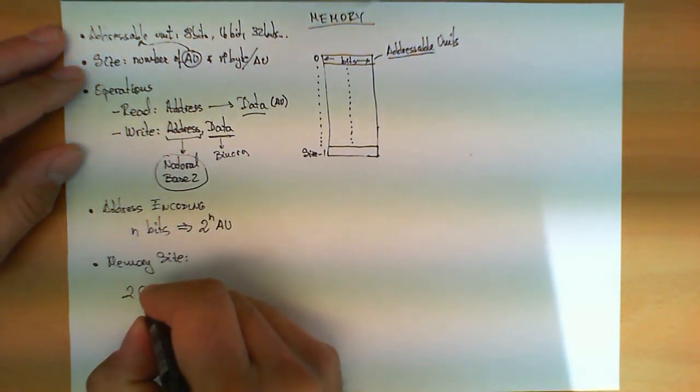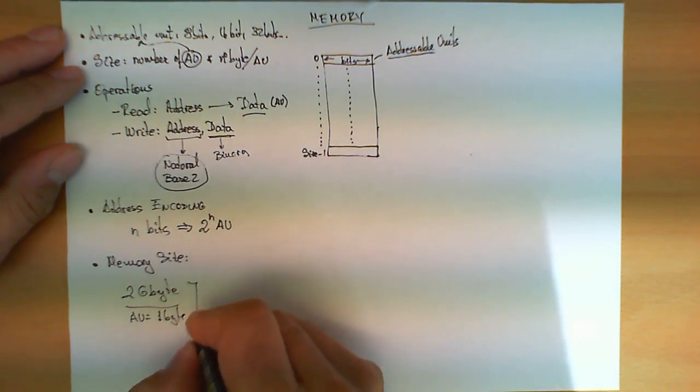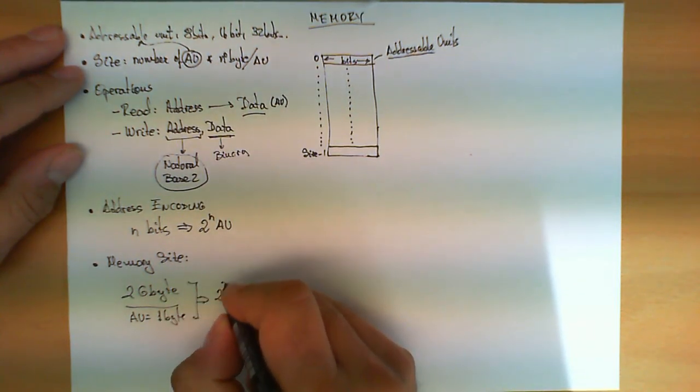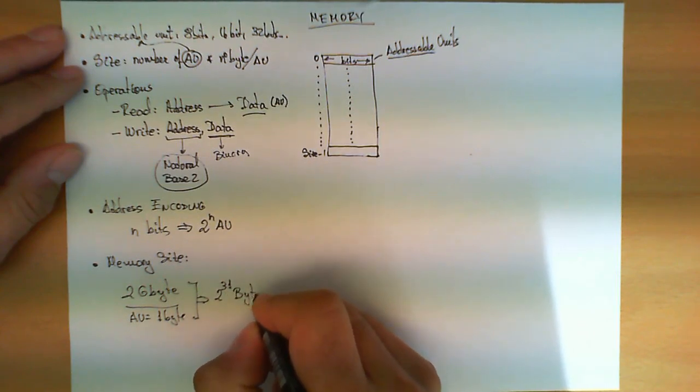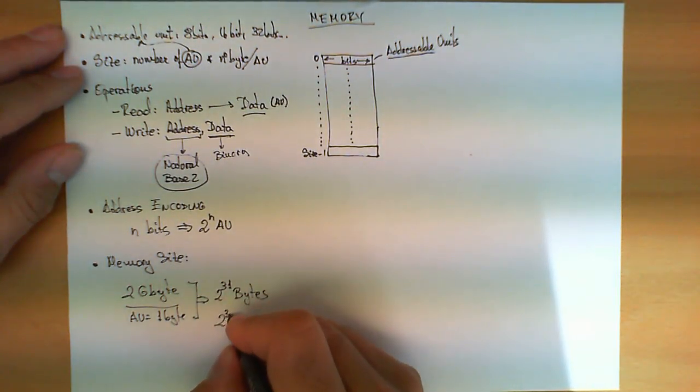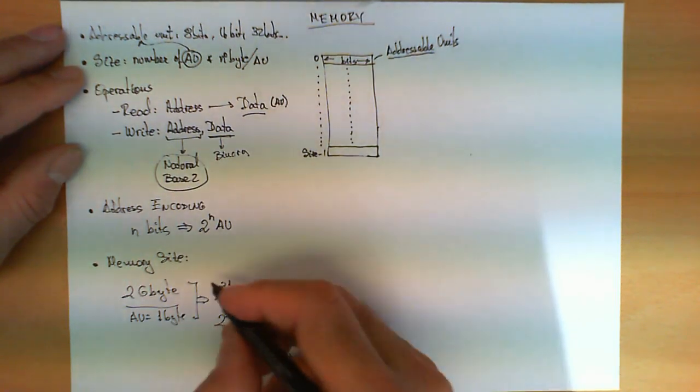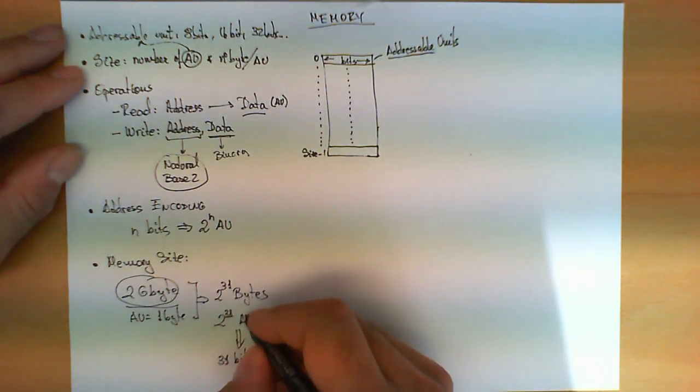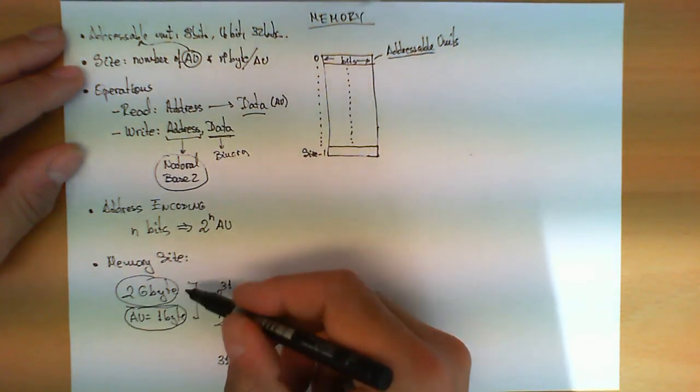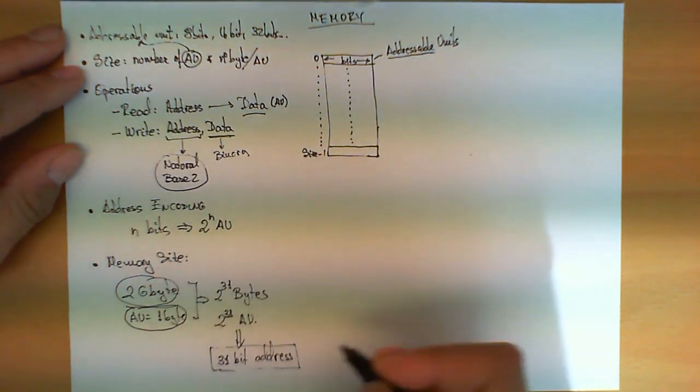Let's see an example. Suppose we have a two gigabyte memory and suppose the addressable unit is one byte. So, in this case, what we have is two to the thirty-one bytes possible and two to the thirty-one addressable units. And therefore, what we have is a thirty-one bit address. So, given the size of the memory and the size of the addressable unit, we can deduce the number of bits that are being used to encode the address.